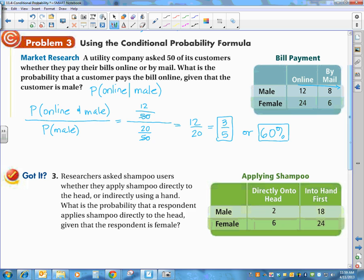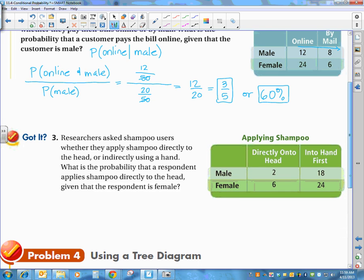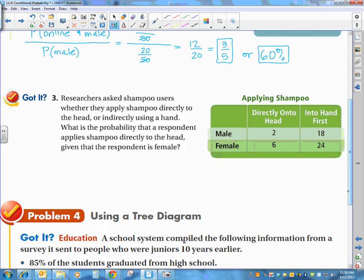And the next one. Doing the same process that we did, the researchers asked shampoo users whether they apply shampoo directly to the head or indirectly using a hand. What is the probability that a respondent applies shampoo directly to the head, given that the respondent is female? They gave us, we know that they're female, so they apply shampoo to their head, given that they are female.